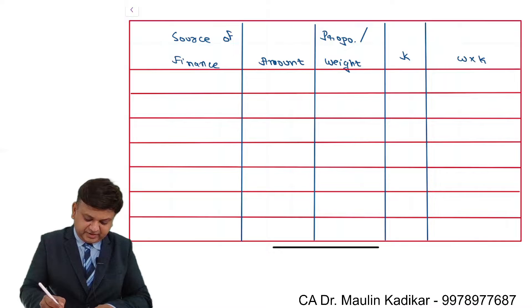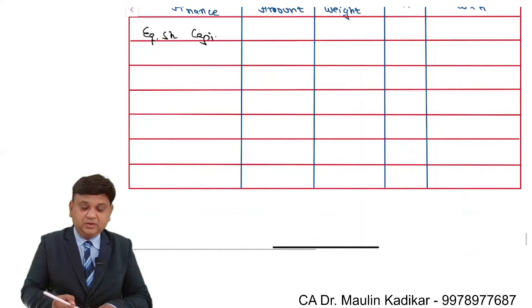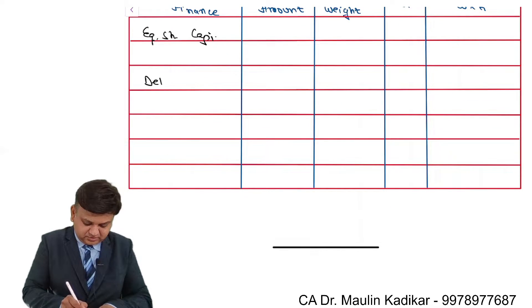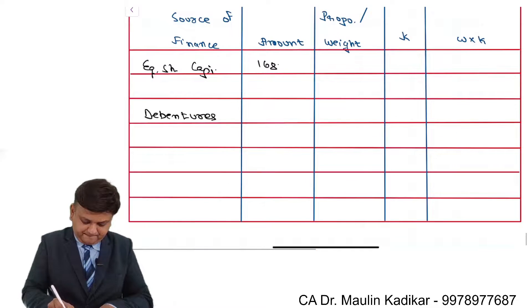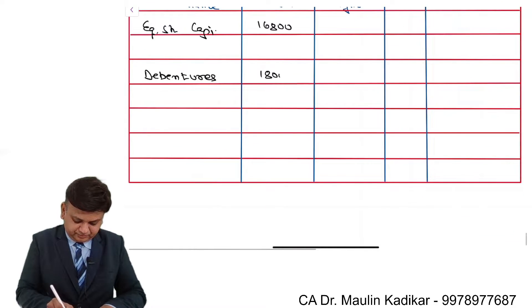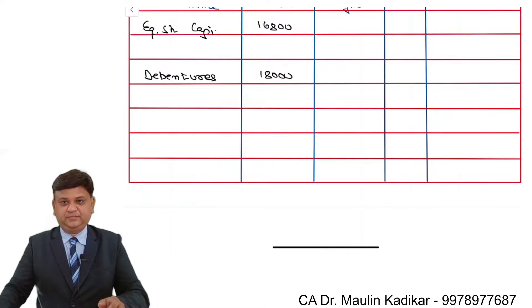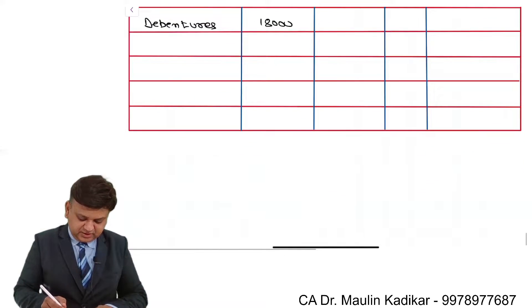In source of finance we will have equity share capital, then we will have debentures. The amount of equity share capital is 16,800 and debentures have a value of 18,000. So the total is 16,800 plus 18,000 equals 34,800.